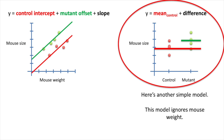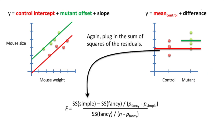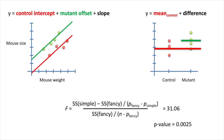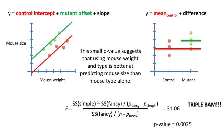Here's another simple model — just a normal t-test, which ignores mouse weight. We plug in the sum of squares of the residuals, the equation has two parameters so p-simple equals 2, and that gives us a p-value equal to 0.0025. Oh my gosh, it's the coveted triple BAM! This small p-value suggests that using mouse weight and type is better at predicting mouse size than mouse type alone.